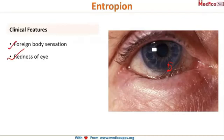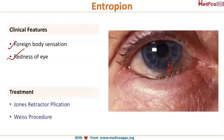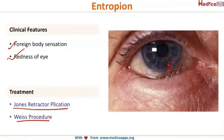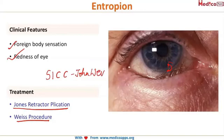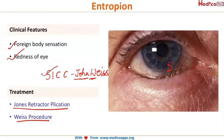Because the lashes are turning inwards and rubbing onto the cornea, the patient presents with foreign body sensation and redness of the eye. The surgical procedures for entropion are Jones retractor plication and the Weiss procedure. Mnemonic: 'Sick John Wise is sick' — SICK for entropion types, J for Jones retractor plication, W for Weiss procedure.